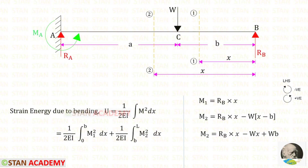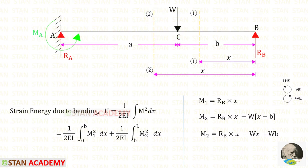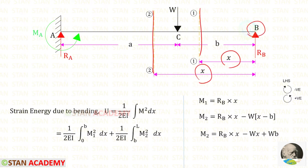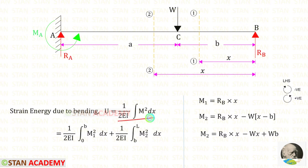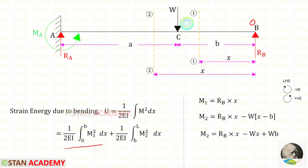You can see that I have made two sections: the first section in CB and the second section in AC. I have made both of the sections at a distance of X from point B. Since there are two sections we have to split the integration into two parts. The limit for the first integration is 0 to B and the limit for the second integration is B to L.